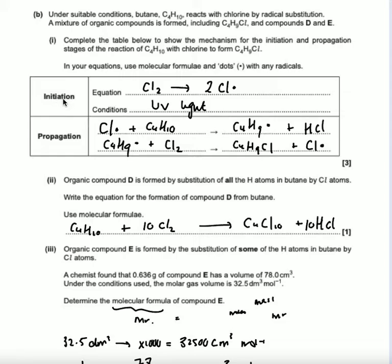So initiation, we start off with using the halogen they've given us, and that turns into a free radical. Here they've said it's chlorine, so we start off using Cl2, and that becomes a free radical. So we put chlorine with a dot, but we need to balance out so it's two lots of chlorine radicals.